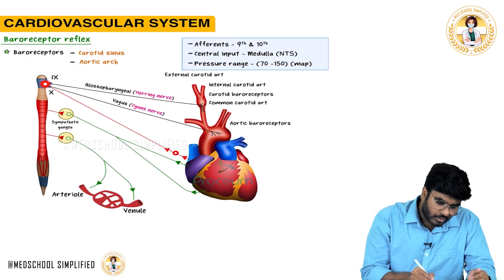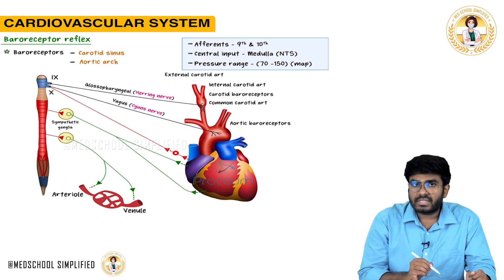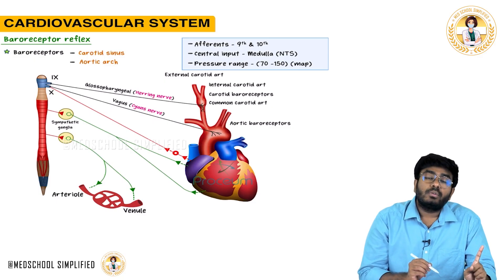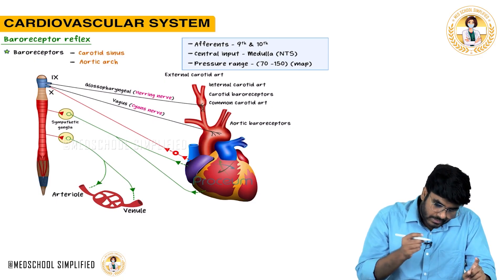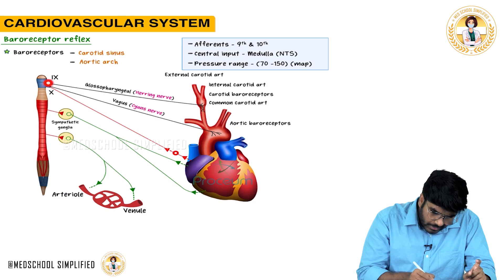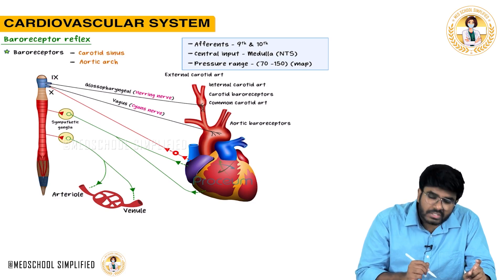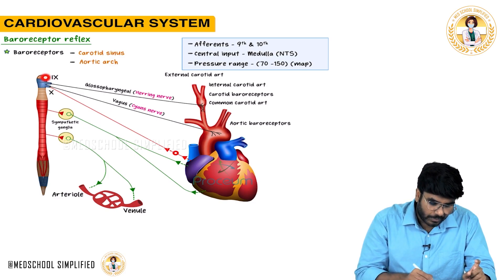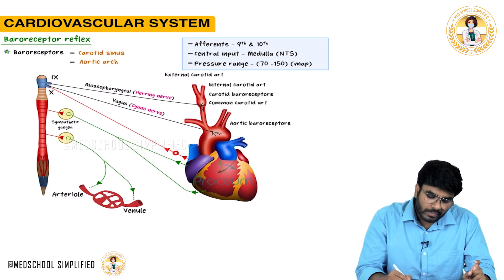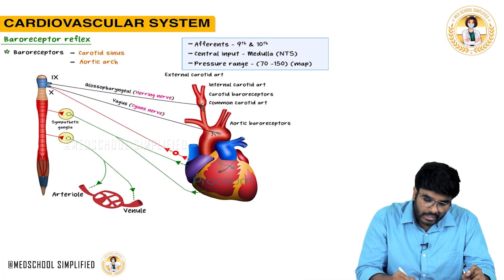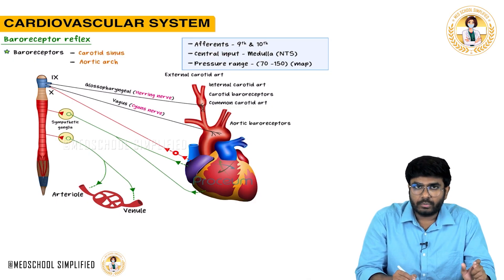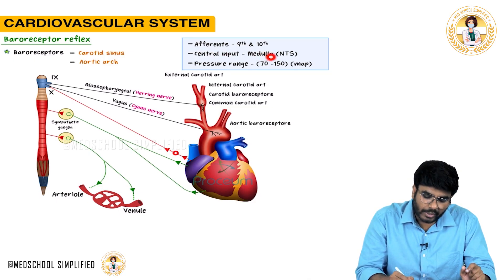The information goes to the nucleus of tractus solitarius, which is present in the medulla. The afferents are the 9th and 10th cranial nerves — Hering's nerve and the sinus nerve. The central processing unit for BP regulation is the nucleus of tractus solitarius in the medulla.